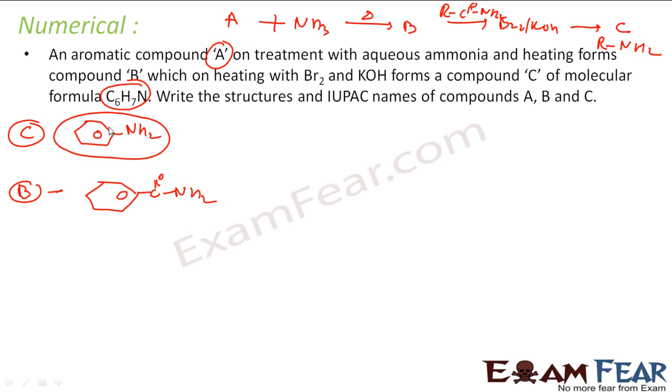I have B and C. Now A, something when you treat with ammonia you get this NH compound. That means A has to be benzoic acid, because this when you add NH3 you get B, that is benzamide. And this when you do Hoffmann degradation you get aniline. This is the sequence: from A you get B, and from B you get C.